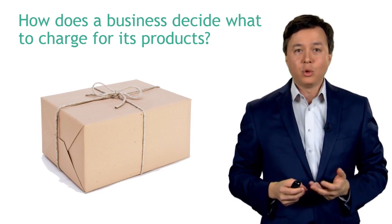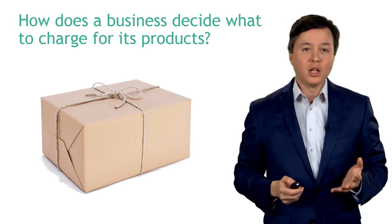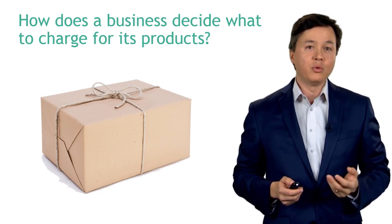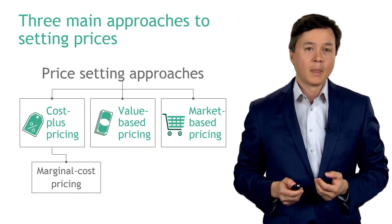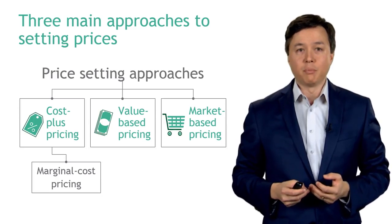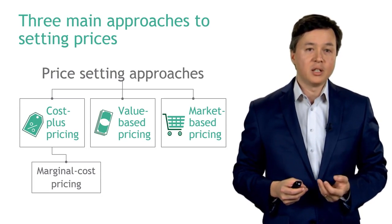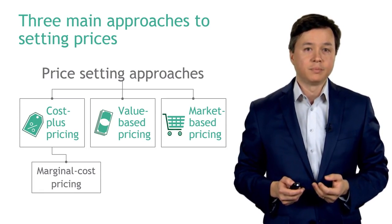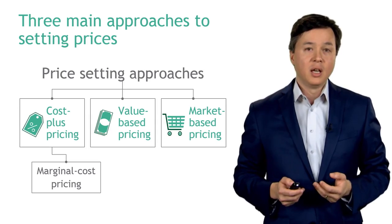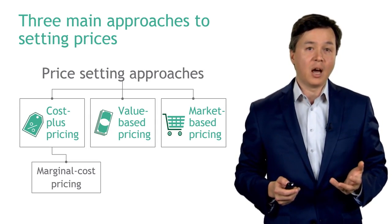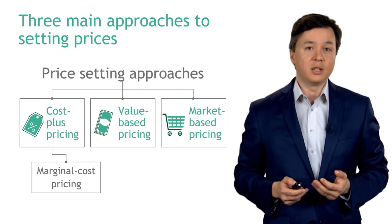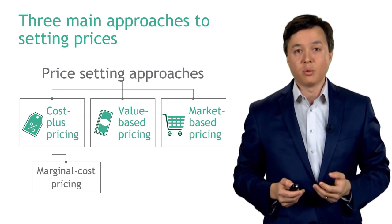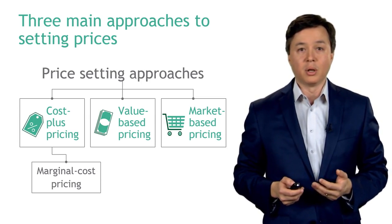How does a business decide what to charge for its product? Imagine a new product in this box and you were asked to provide a point of view on what you should charge for it. There are three main approaches to set prices: cost plus pricing, with a variant called marginal cost pricing which we'll cover separately; value based pricing, which has an entire course about customer value; and lastly, market based pricing, which is covered in course three when we talk about competitors.